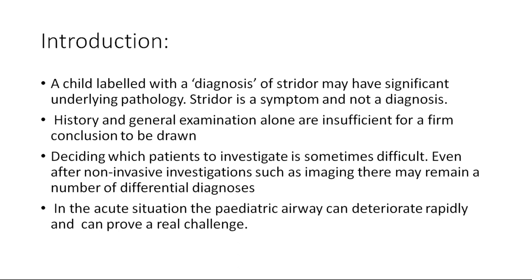Stridor can be supraglottic, glottic, or subglottic. Above the vocal cords is called supraglottic; the glottic part is nothing but the vocal cords or vocal ligament part; and the subglottic is below the vocal cords, in the cricoid area and below.